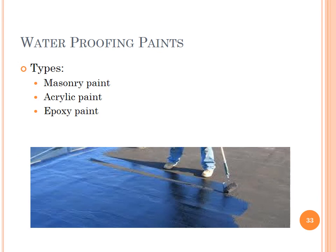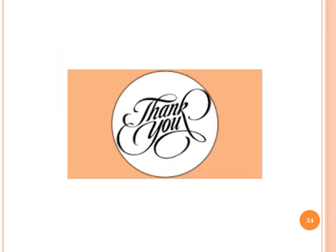Waterproofing paints mainly include masonry paint, acrylic paint and epoxy paint. They are used, for example, for the terraces of buildings. So that's all about part three of the modern construction materials. Thank you.